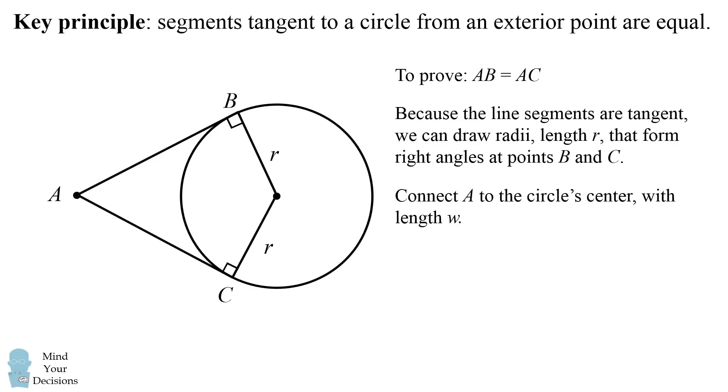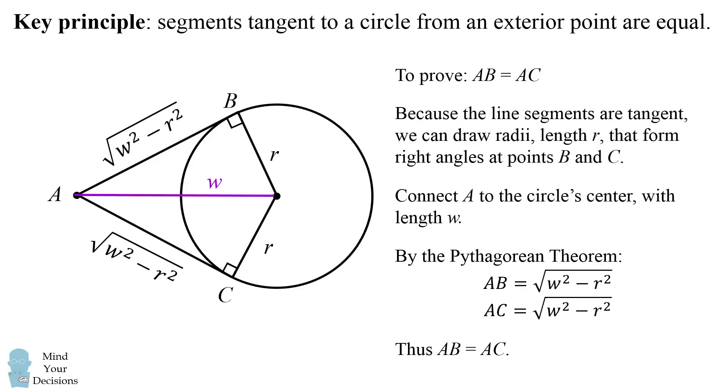Now we'll connect A to the circle's center with length W. Because we have right triangles, we can use the Pythagorean theorem. We can calculate that AB is equal to the square root of W squared minus R squared, and AC has the same length. Thus AB is equal to AC.